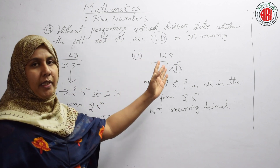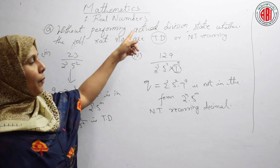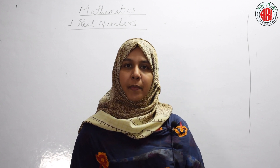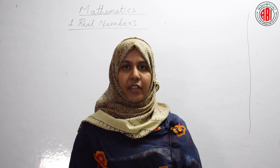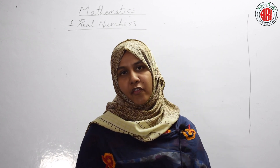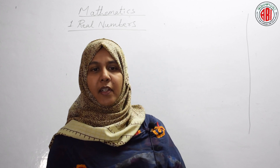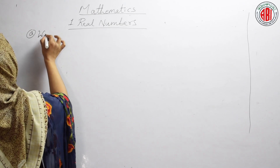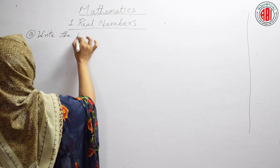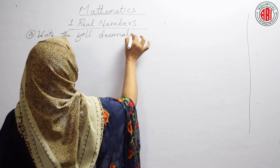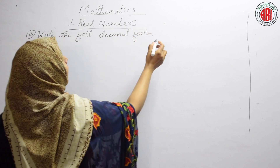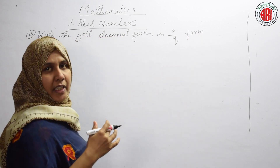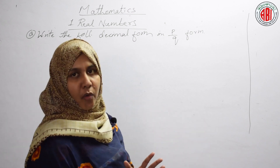Hope you have understood the differences between terminating and non-terminating decimals without performing actual division. Now we have a new type of problem: writing the terminating decimal in the form of P by Q. In the previous questions we converted P/Q into decimal form. Now we will write the decimal forms in the form of P by Q. Decimal numbers will be given, and you must write them in the form P/Q where Q ≠ 0 and P and Q are co-primes.